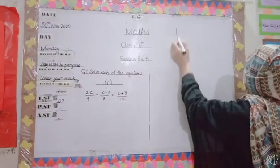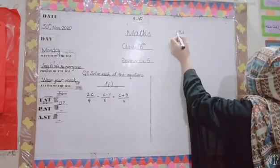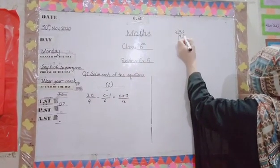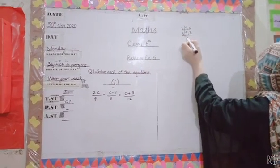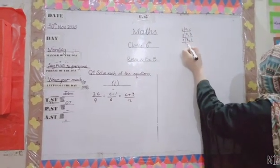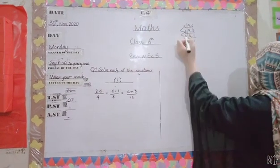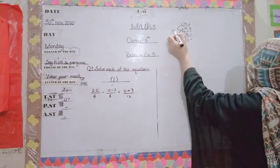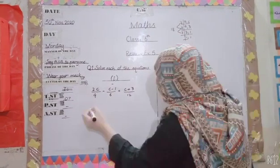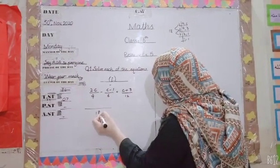First, we will find the LCM of 9 and 6. Calculating: 2 threes are 6, 3 threes are 9, 3 ones are 3, 2 threes are 6, 6 threes are 18. The LCM is 18, divided by 18.